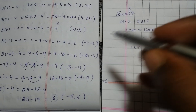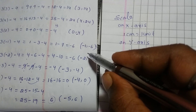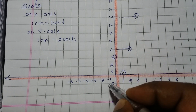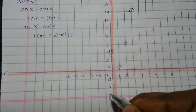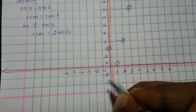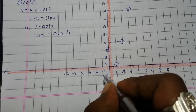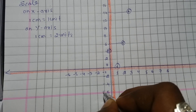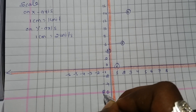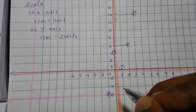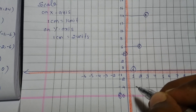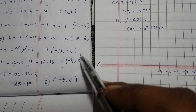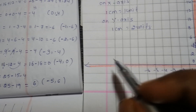Mark the point minus 1 comma minus 6 on the graph. Next is minus 2 comma minus 6.